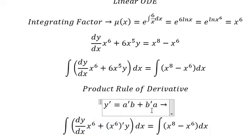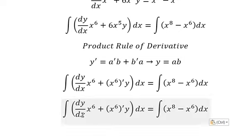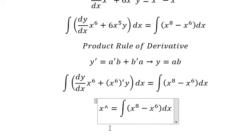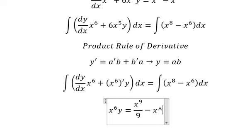Y equals the integration of this one. We have Y equals ab, so the integration of that one gives us X to the power of 6 times Y. This one gives us X to the power of 9 over 9, and the next one is about X to the power of 7.